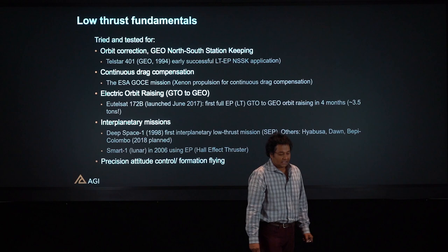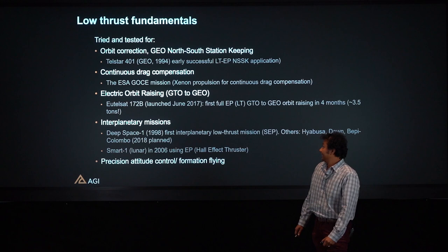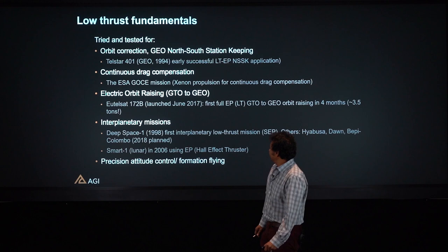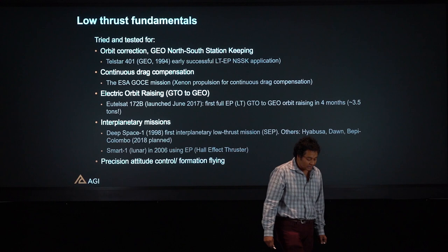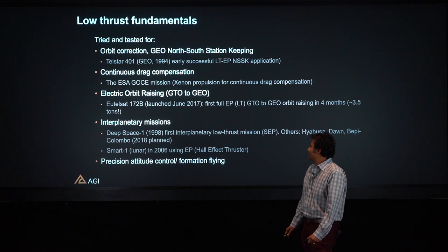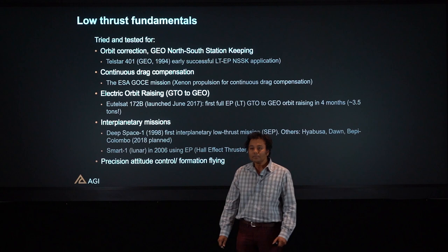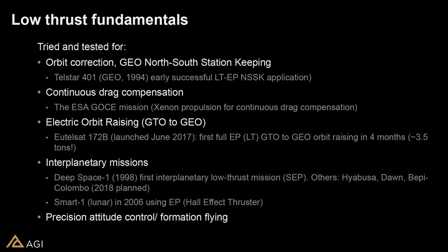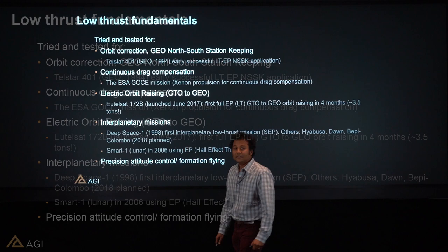Here are some Low-Thrust propulsion missions that have flown — they are not theoretical. One of the earlier use cases was orbit correction and GEO north-south station keeping. Similarly, there was an ESA GOCE mission which used a low-thrust propulsion system for continuous drag compensation. One of the popular use cases is electric orbit raising, for example GTO to GEO. I'll show an AstroGator test case later that implements an EOR-type mission.